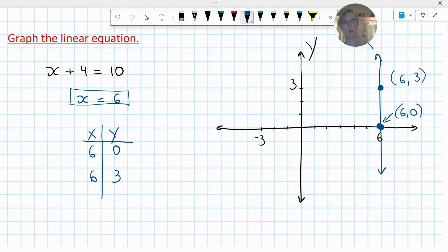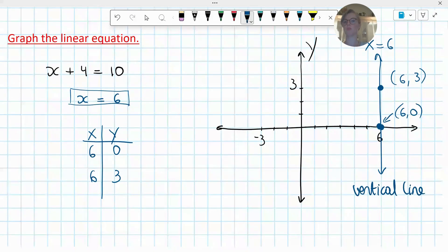This is the equation x is equal to 6. We call this a vertical line. And by the way, do you know what the slope is? Let's find out what the slope is.